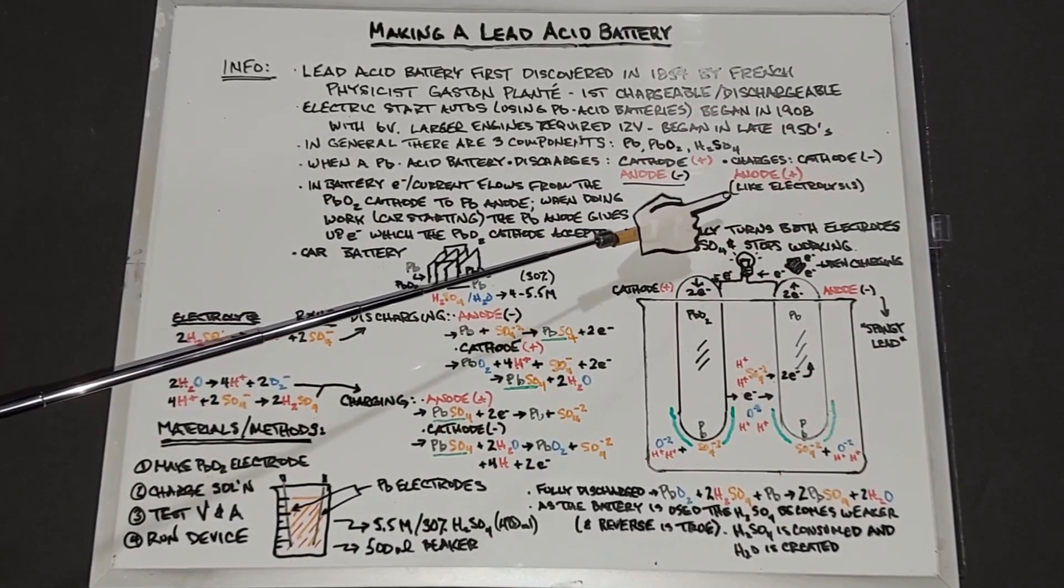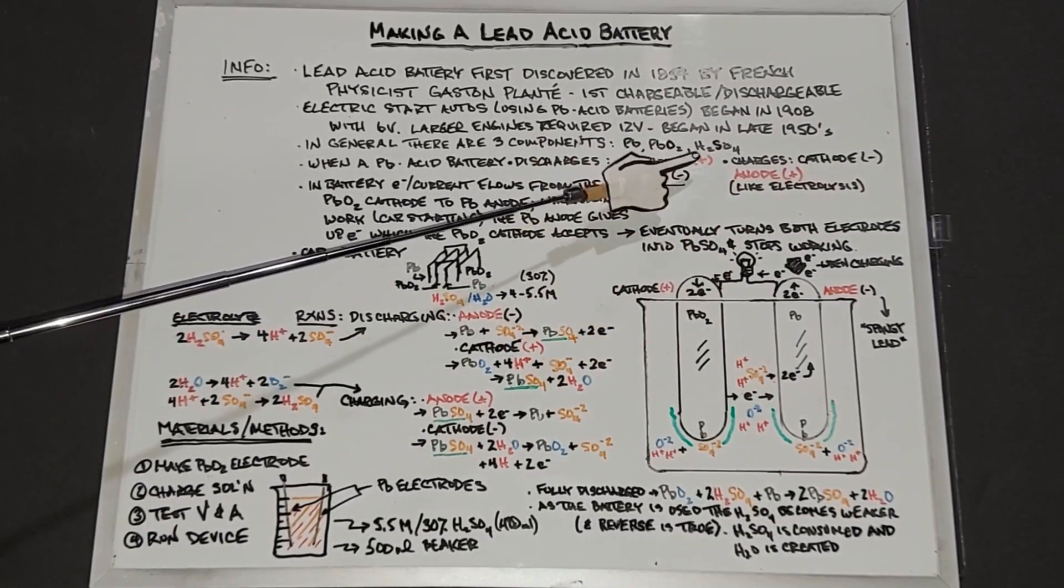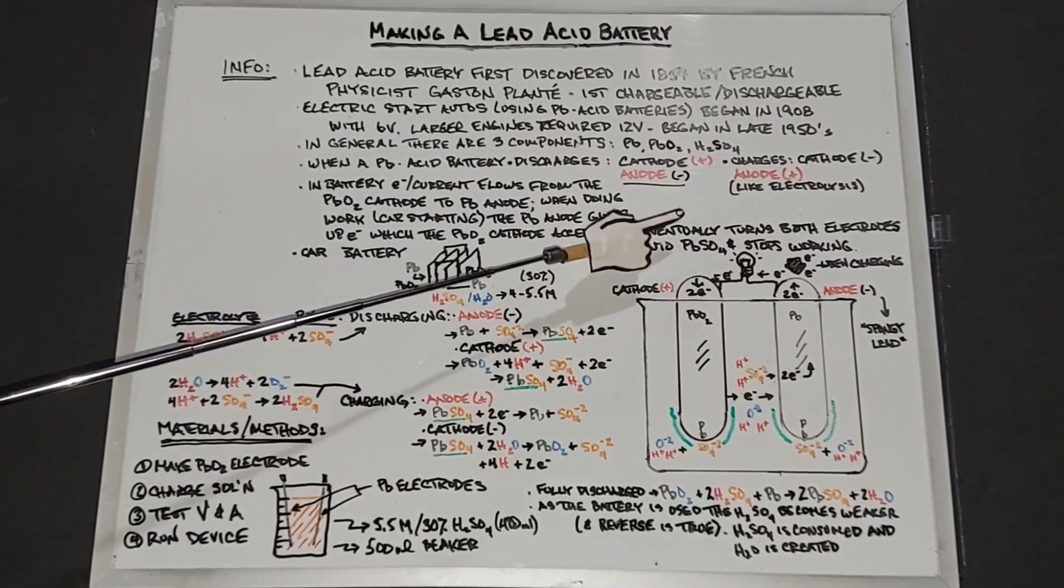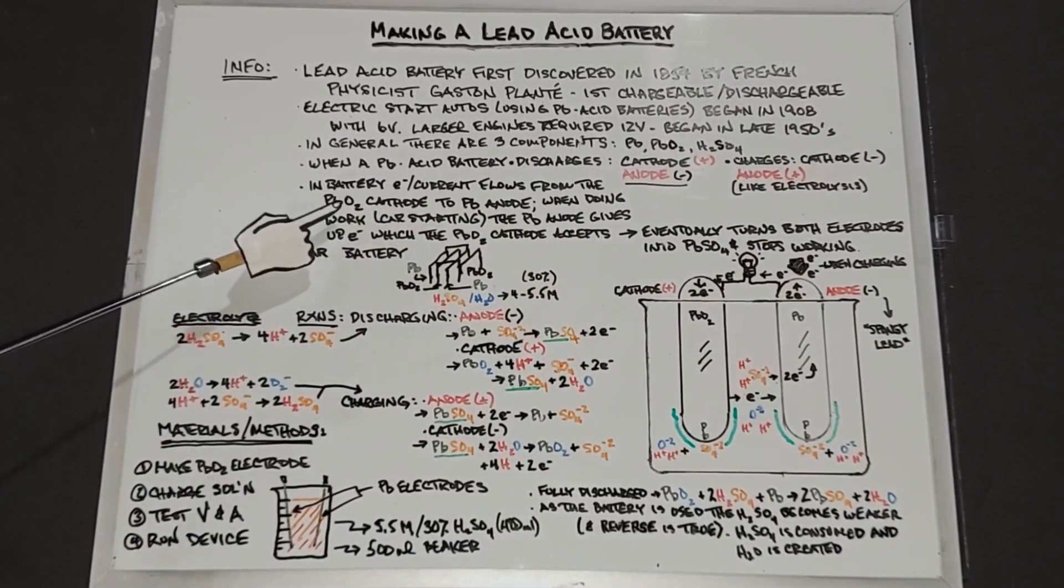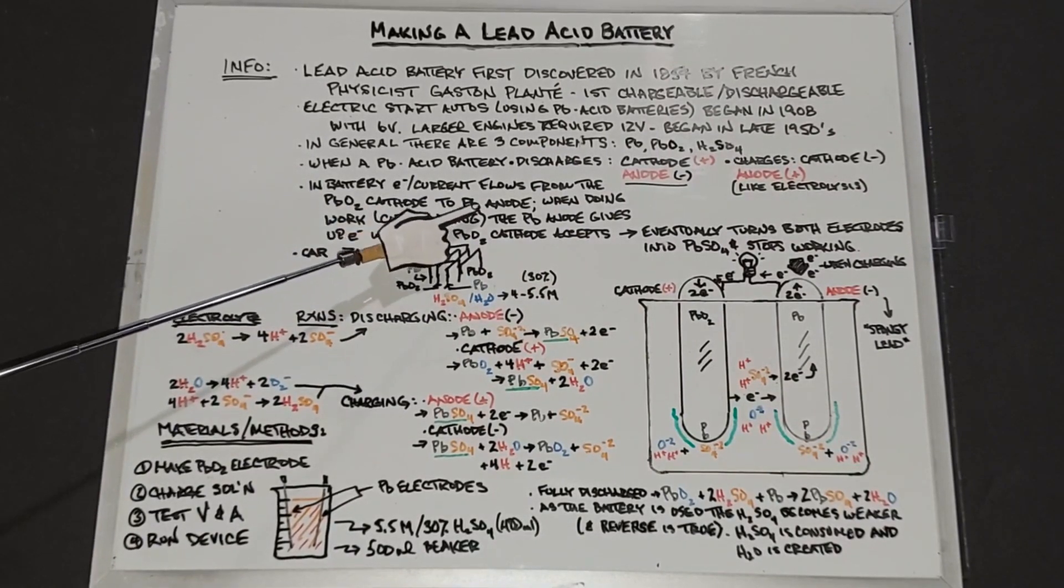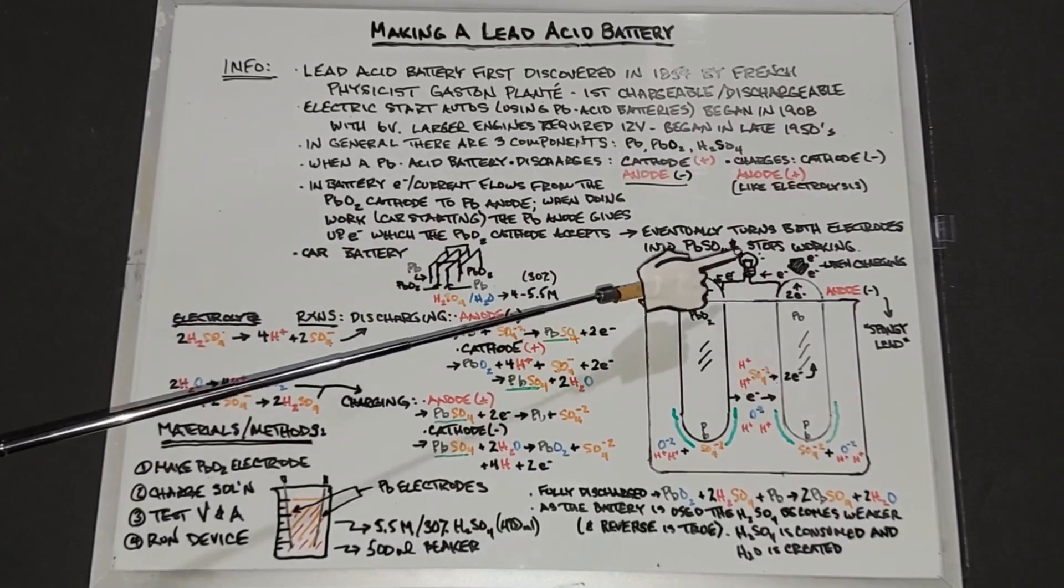It's the setup just like in electrolysis, but I'm keeping the cathode positive and the anode negative just for simplicity. In a battery, the current or the electrons are flowing from the lead dioxide cathode to the lead anode when doing work.